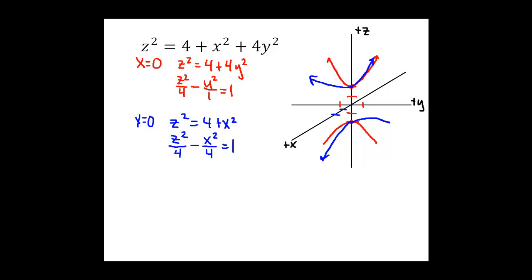Okay, so we have this set of hyperbolas, one in the yz plane and then another in the xz plane both opening in the positive z direction. When I go to do my third trace in the xy plane, I plug in z equals zero.